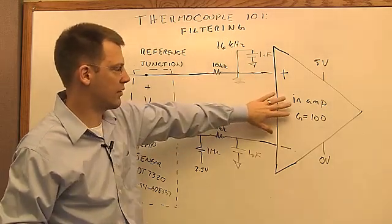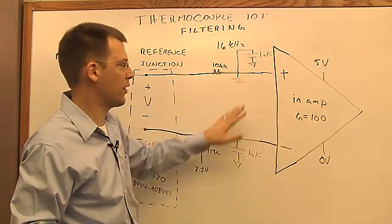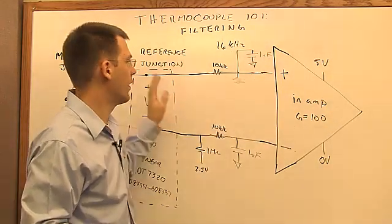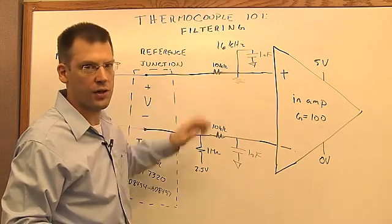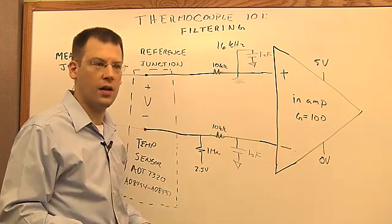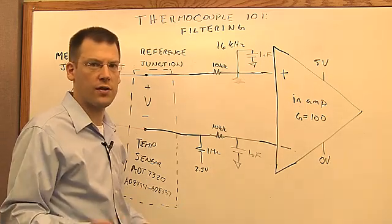Because remember, this in-amp is going to have some bias current. So let's pretend this in-amp has 1 nanoamp of offset current. That 1 nanoamp is going to flow through this 10 kiloohms and give you about 10 microvolts. And remember that for a K-type thermocouple, it's only about 40 microvolts per degree C.